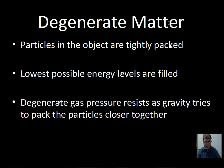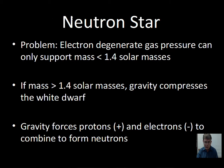We're towards the end of a star's life, talking about the remnants that can occur. As a reminder on degenerate matter — we saw this with the electrons for the white dwarf creating a degenerate gas pressure — the general principle is that objects are packed closely together, using up the lowest energy levels possible. An atom has a lot of empty space between the nucleus and the surrounding electrons, but in degenerate matter the pressure is not related to temperature; it resists gravity and can hold up the star to a certain size.